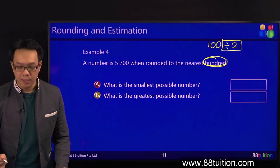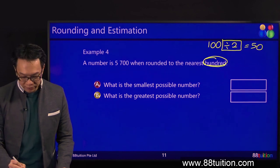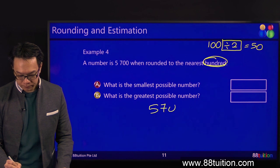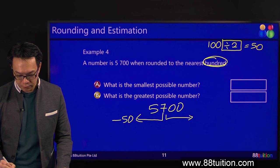100 divided by 2, 50. What next? 5,700. On the left, minus 50. On the right, plus 50.